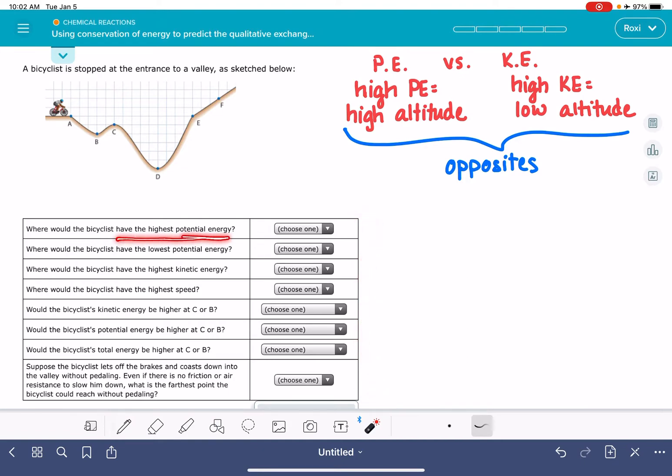Where would the bicyclist have the highest potential energy? The highest potential energy is the highest altitude. So looking at all the different points on the graph, we're going to find the highest point on the graph, which is F. The bicyclist has the highest potential energy at the highest point.